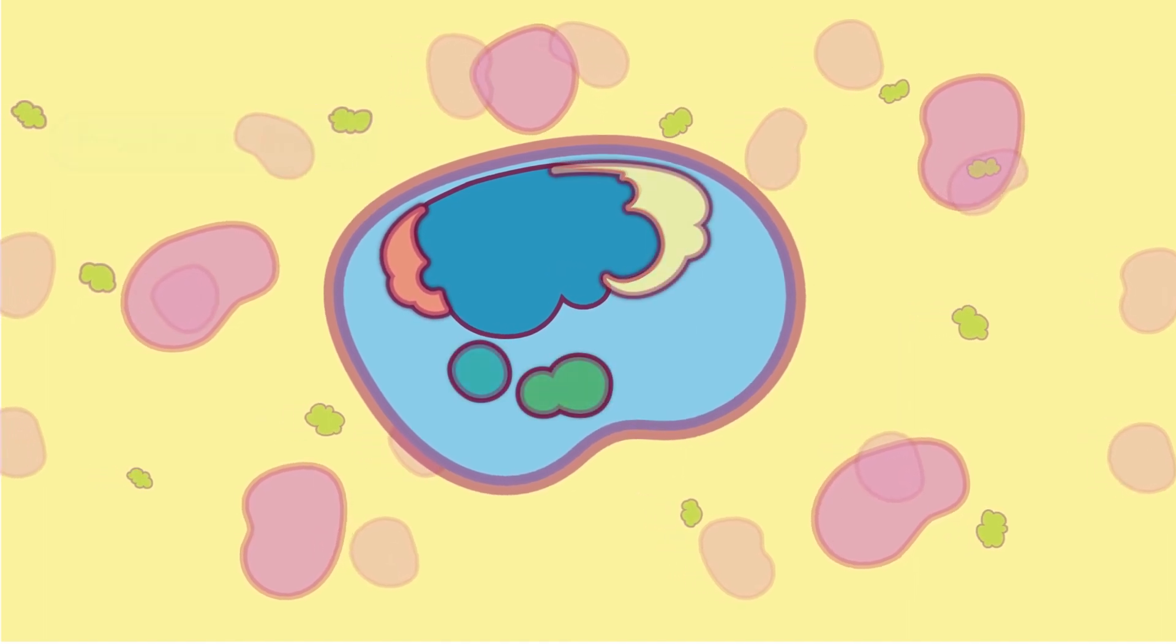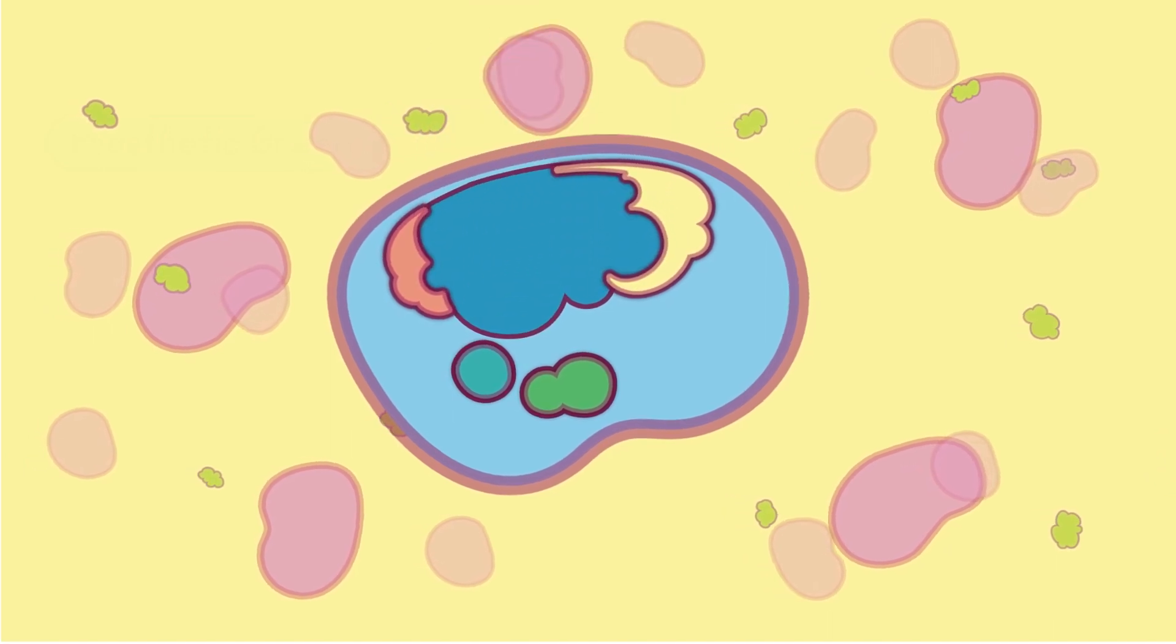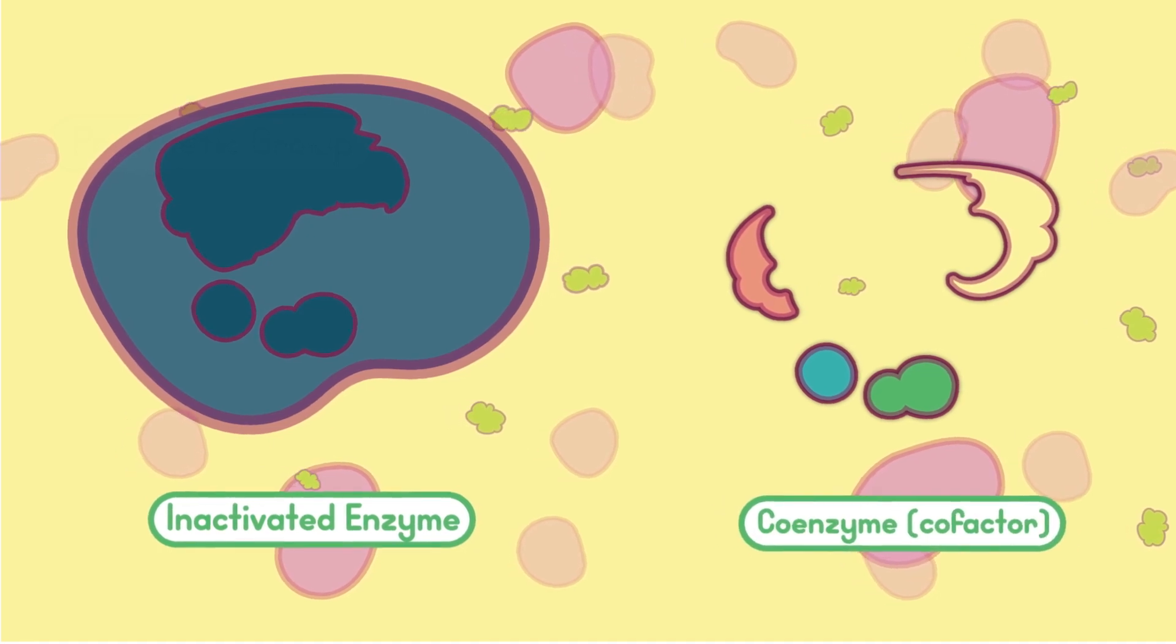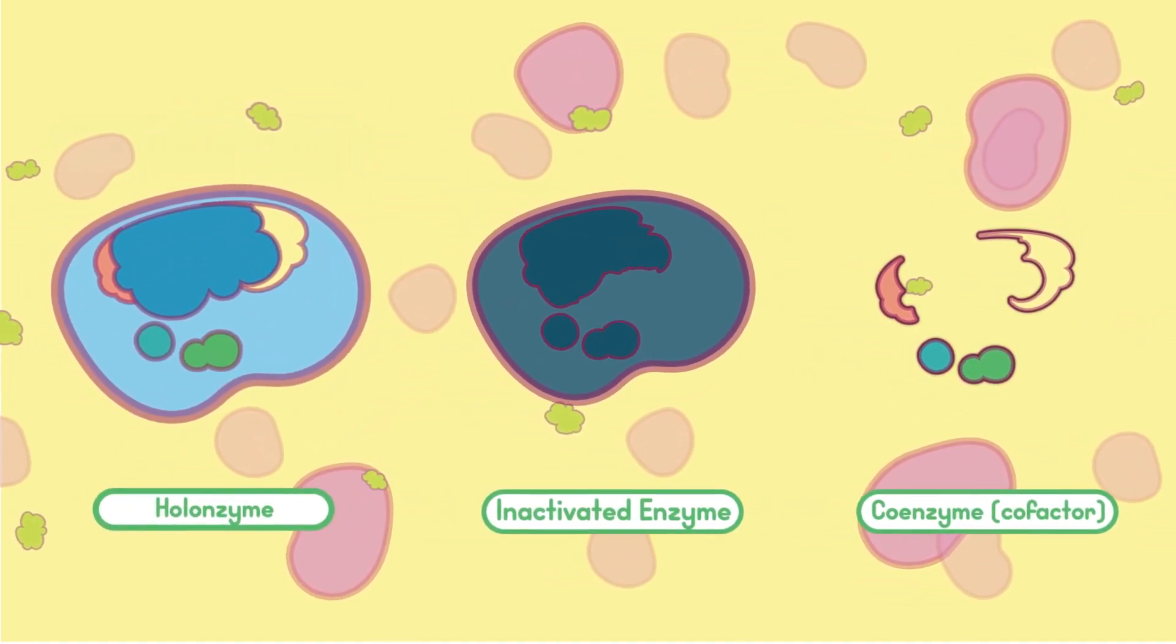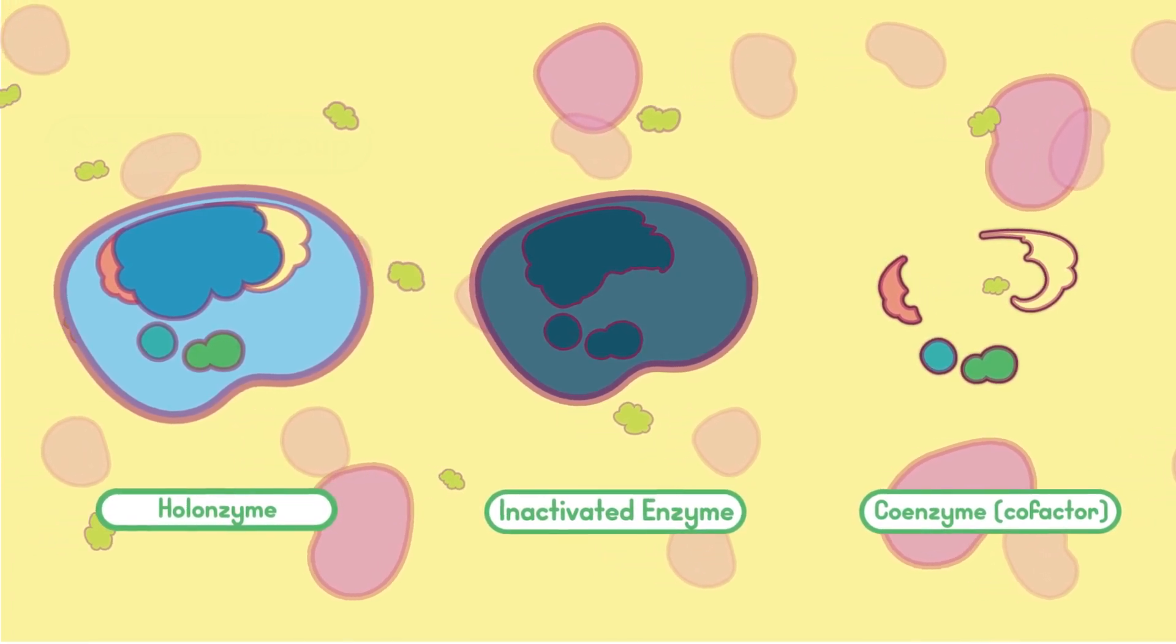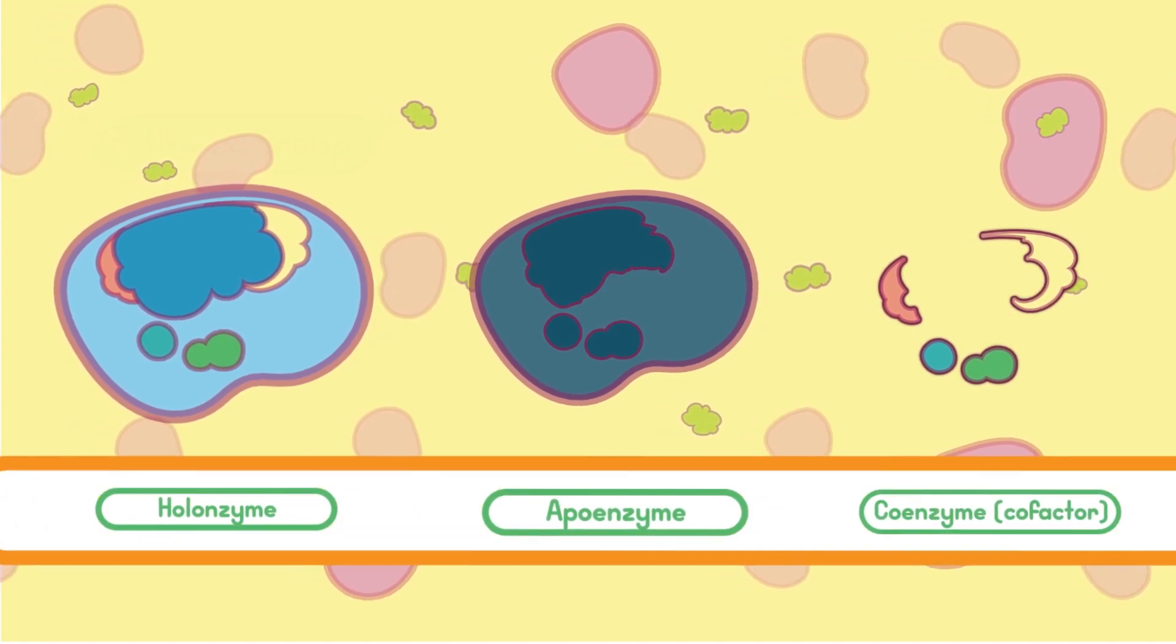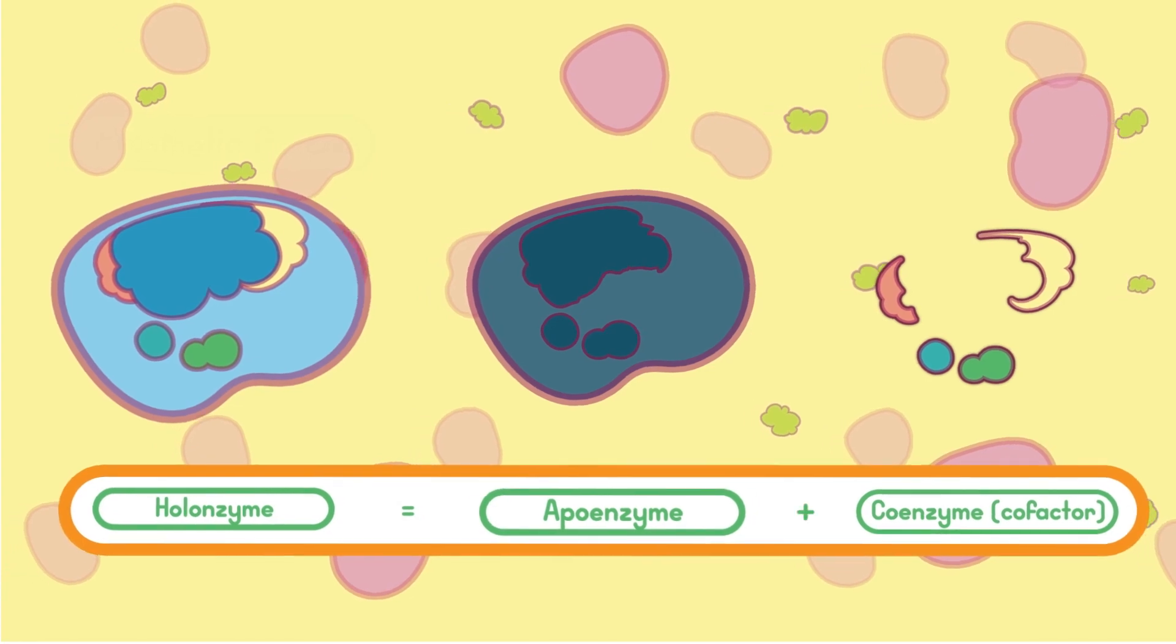Many enzymes only perform their catalytic role when associated with a coenzyme. An inactivated enzyme (protein), along with its coenzyme (non-protein), makes up a system called holoenzyme. To add to the complexity, scientists termed this inactivated enzyme as apoenzyme. And therefore, the equation becomes: holoenzyme equals apoenzyme plus coenzyme.